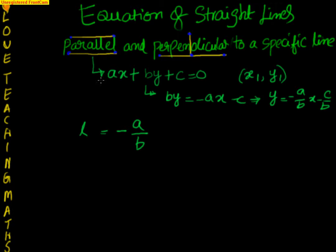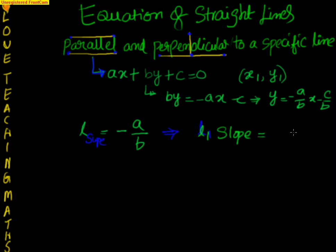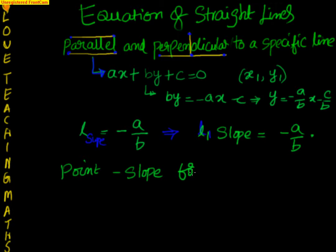The straight line equation given is ax plus by plus c equal to 0, and we have been asked to find the equation of the straight line which is parallel to ax plus by plus c equal to 0 and passing through x1 comma y1. Since we know parallel lines will have the same slope, l slope is minus a by b, which tells me that slope of l1 is also equal to minus a by b. Now we have a point and we have a slope — this is nothing but point slope form.